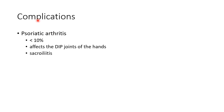Psoriatic arthritis occurs in less than 10% of patients with psoriasis. It affects the distal interphalangeal joints of the hands. Sacroiliitis can also be seen in psoriatic arthritis.